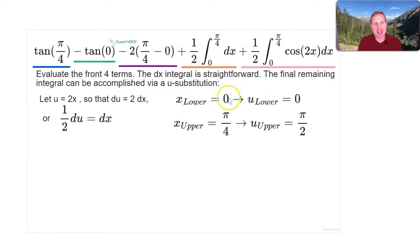We also should change the bounds of integration. So these are x bounds from 0 to π/4. So when I take x equaling 0, and I plug it into the u formula, then u lower bound is 0. But if I take π/4, which is the upper x bound, and I plug that into the u formula, I have 2π/4, which simplifies to π/2. So that's now the new upper bound.